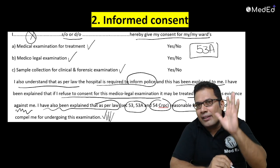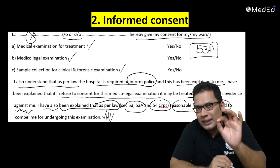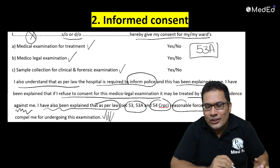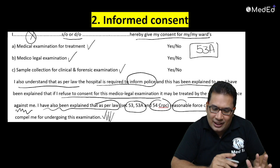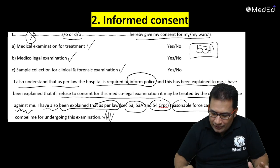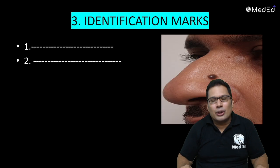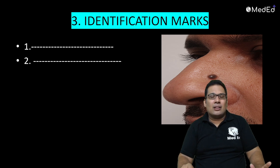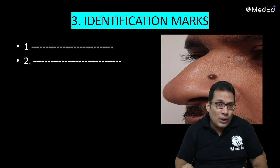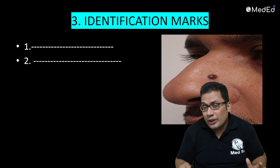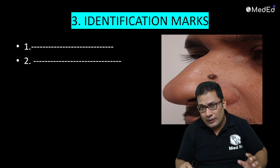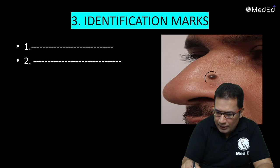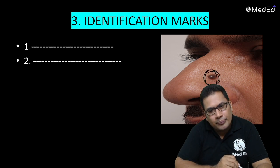Note: you cannot force the victim for medico-legal examination as per Section 160 CRPC. Next is the third component: identification marks. At least two identification marks are required — for example, a scar or mole — to identify the accused in case of sexual violence.